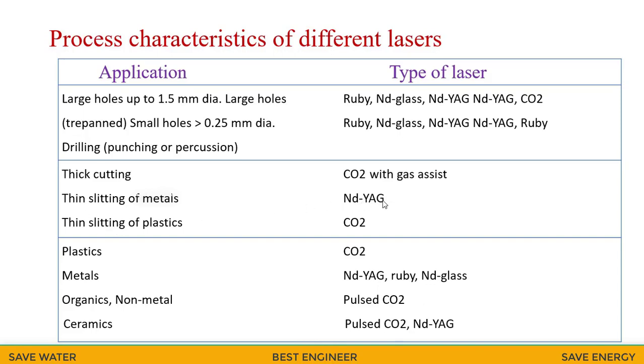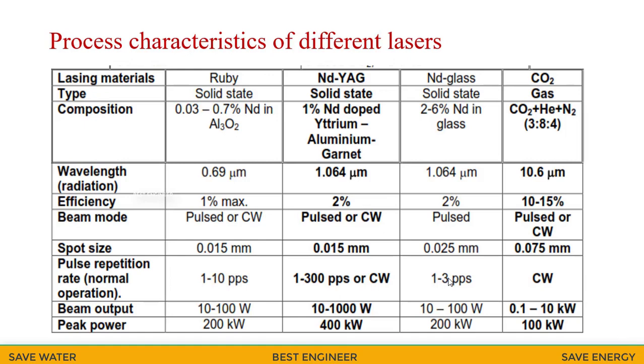Thin slitting, we can go for the neodymium YAG. And for the plastic, we can go for the carbon dioxide. Metals, we can go for the neodymium YAG, or ruby neodymium glass.